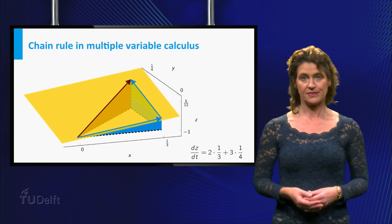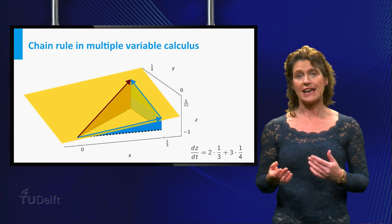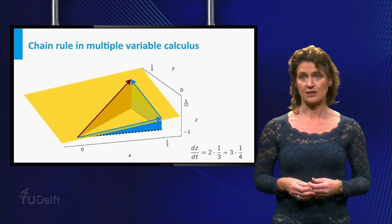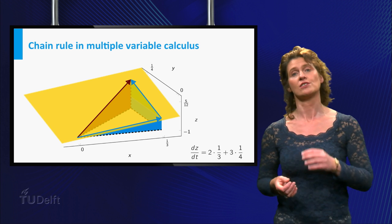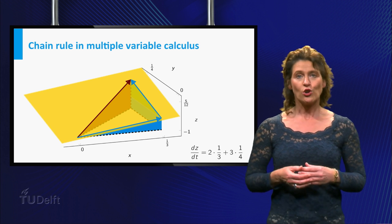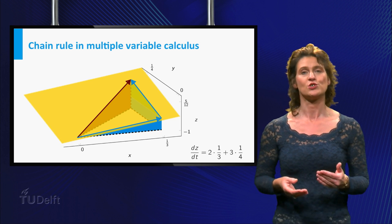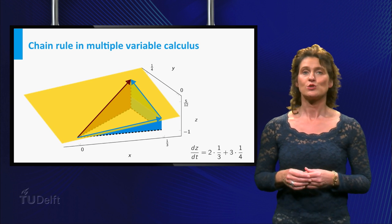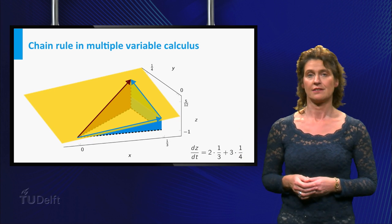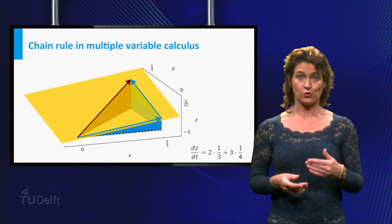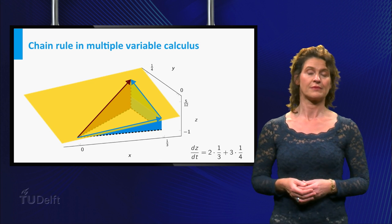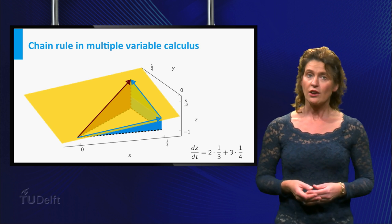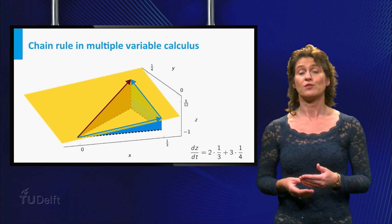The picture shows what this means. If t increases by 1, we change both the x and y coordinates slightly. Instead of going directly to the new point following the red line, we can first take a step in the x direction of length 1 third, followed by a step in the y direction of length 1 quarter, following the blue lines. The total change in height is the sum of the changes for each of these two small steps. The change in height for the x step equals the size of the step times the slope in that direction — illustrated by the height of the blue triangle at the front of the picture — that is, the derivative of f with respect to x times the derivative of x with respect to t. Likewise, the change in height for the step in the y direction equals the derivative of f with respect to y times the derivative of y with respect to t.